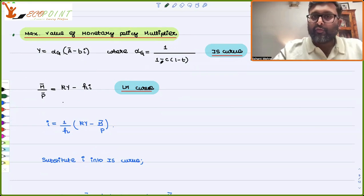Where alpha G is 1 upon 1 minus C into 1 minus T. Small c is MPC, small t is the marginal propensity to tax. And LM curve is M bar by P bar, which is KY minus HI.